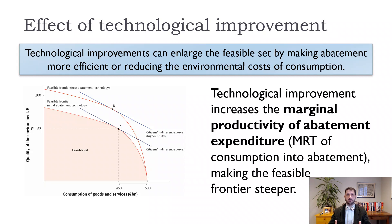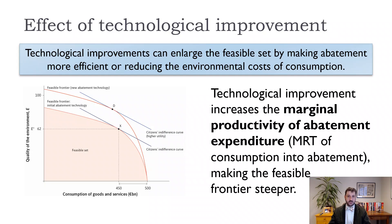One of the roles of government can be to provide incentives for private industry to continue making technological improvements — whether through regulation, like requiring higher miles per gallon in cars or requiring a certain amount of electricity be generated through renewable resources, or through subsidies, like providing a subsidy to buy an electric car or to change an oil-burning furnace to a heat pump. Those are different ways the government can help shift up this feasible frontier.